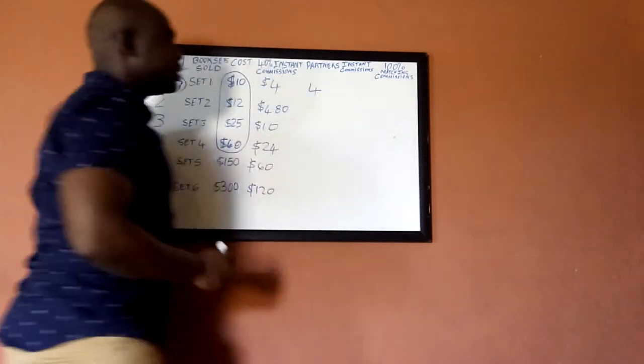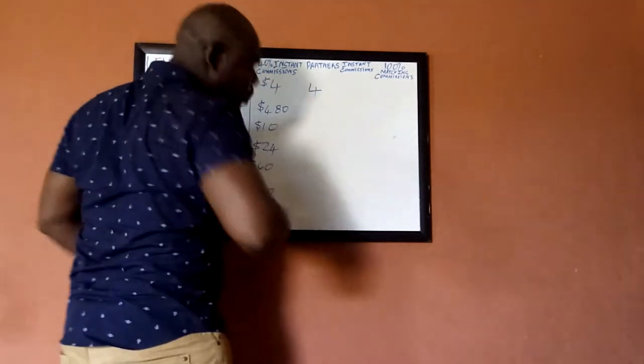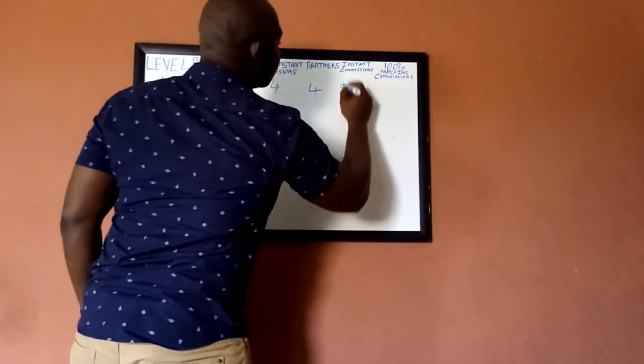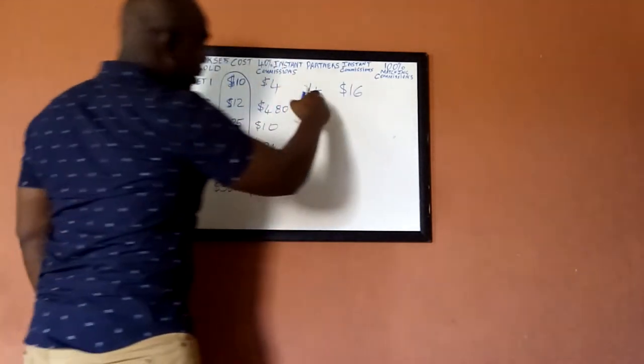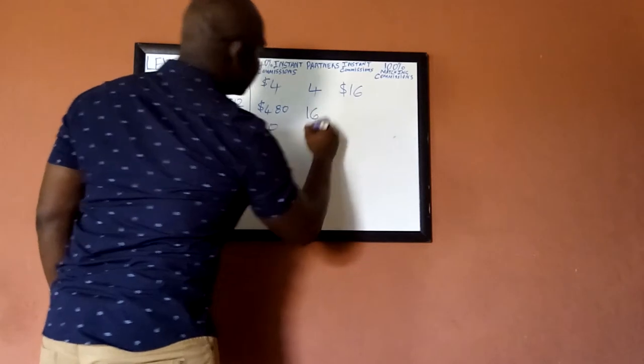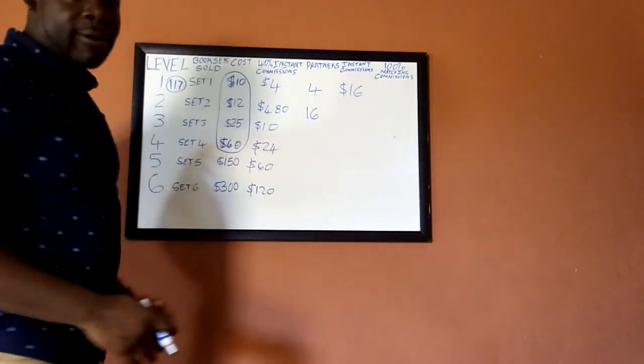You get your four partners, set one would hit you, so you get instant commission of $16. So that's $4 times the four people here. Now they partner with four persons who offer four set of books.